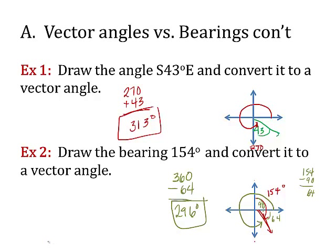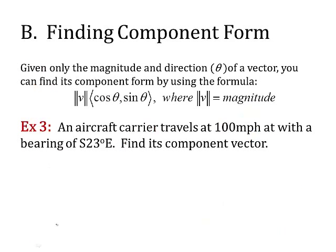Now, this is important to be able to find component forms, because you've got to have your angle in vector form to be able to calculate correctly. So for finding component form, if you're given just the magnitude and the direction of a vector, you can find its component form using the formula: magnitude times the component form (cosine of theta, sine of theta). Remember cosine is always the horizontal or our x, and sine is always our y. That's why this works. So this is the formula you're going to revert back to each time.